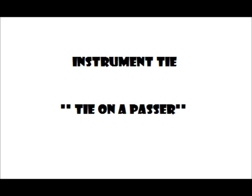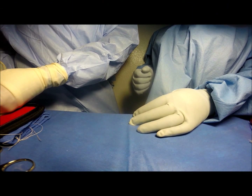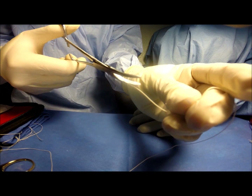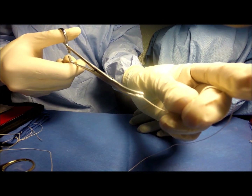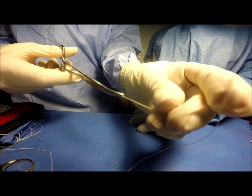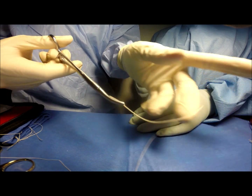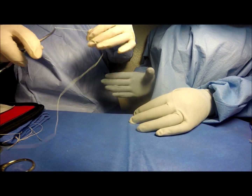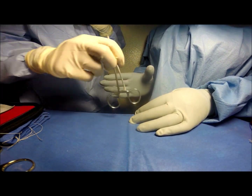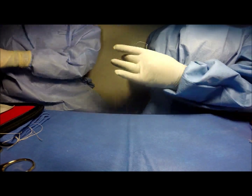Instrument tie, or tie on a pass. A suture is loaded onto the tip of an instrument, usually a Kelly clamp, and handed to the surgeon by holding on to the suture end and the instrument until they can have full control of it. Can I have a tie on a pass, please? Thank you.